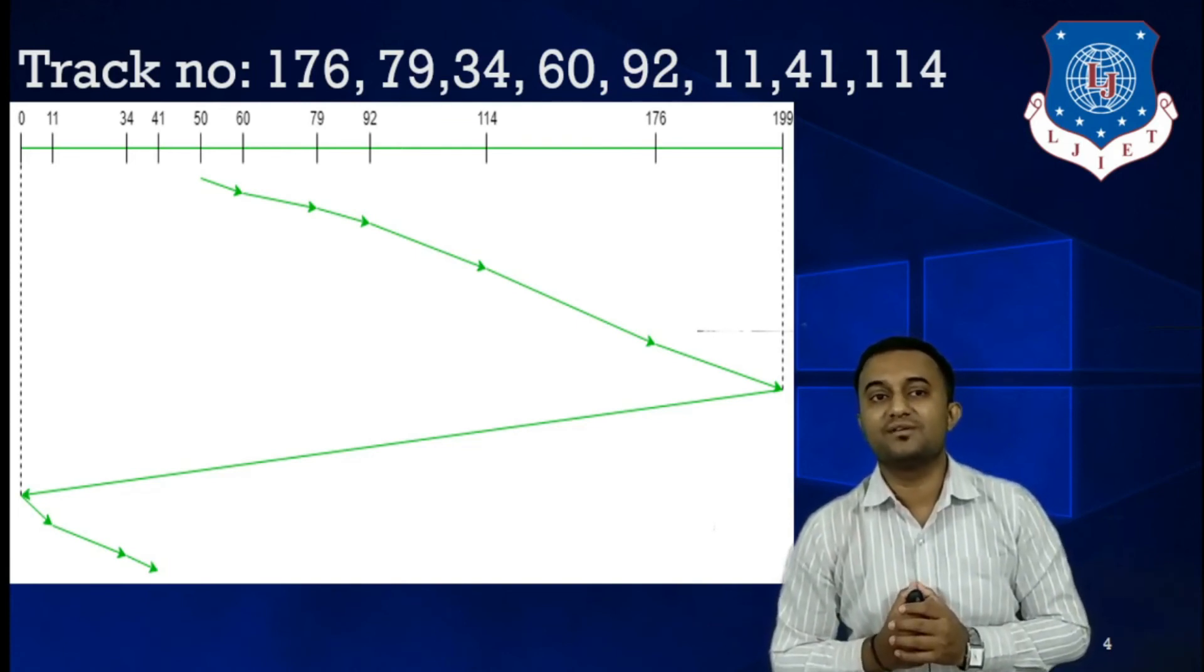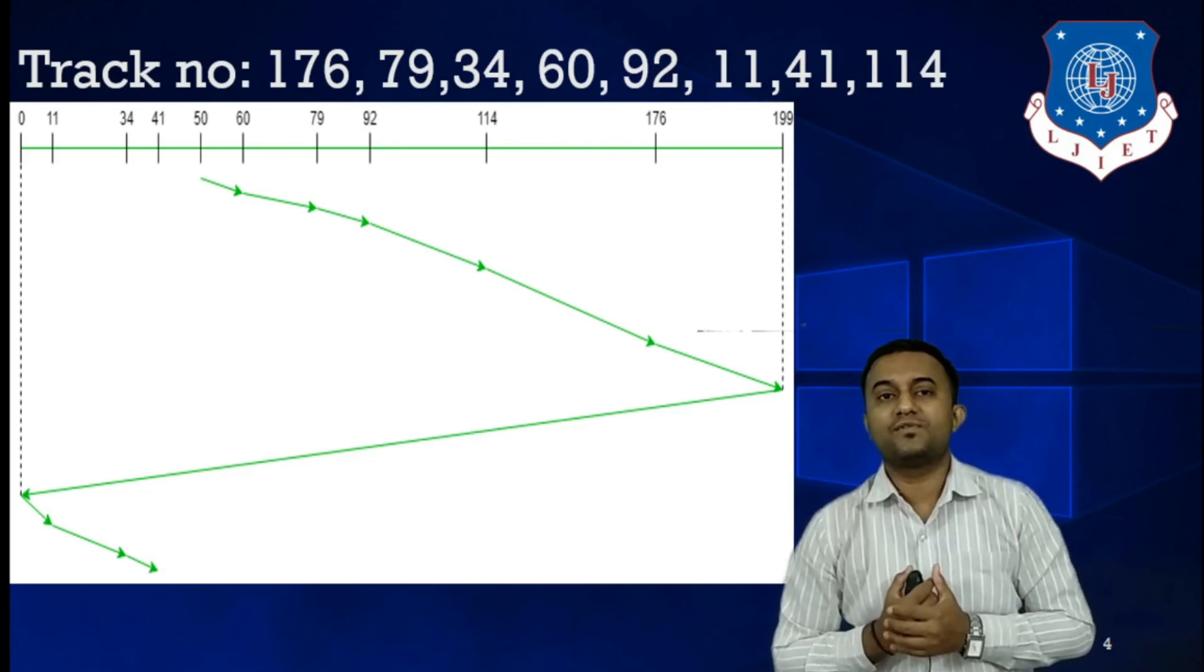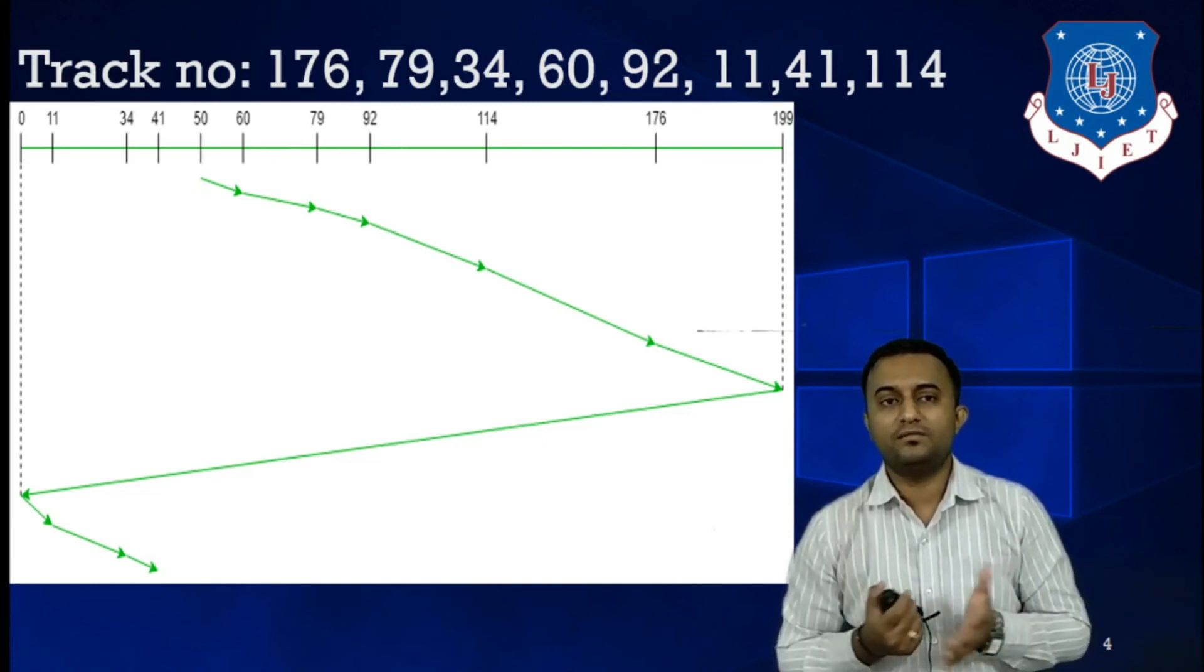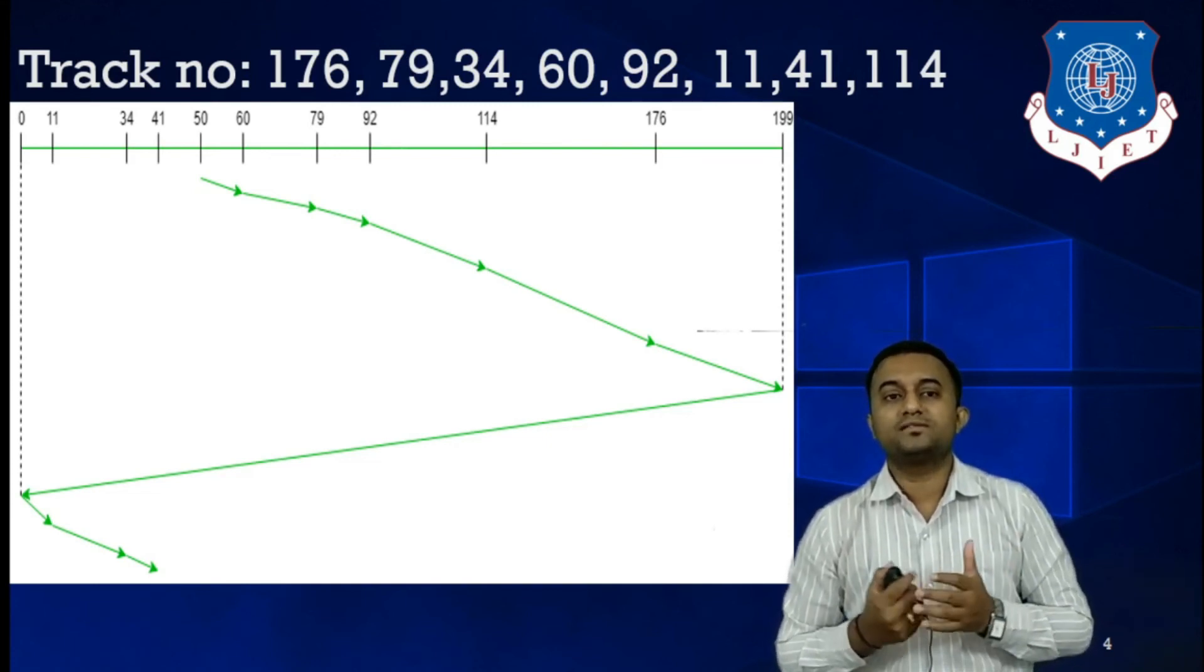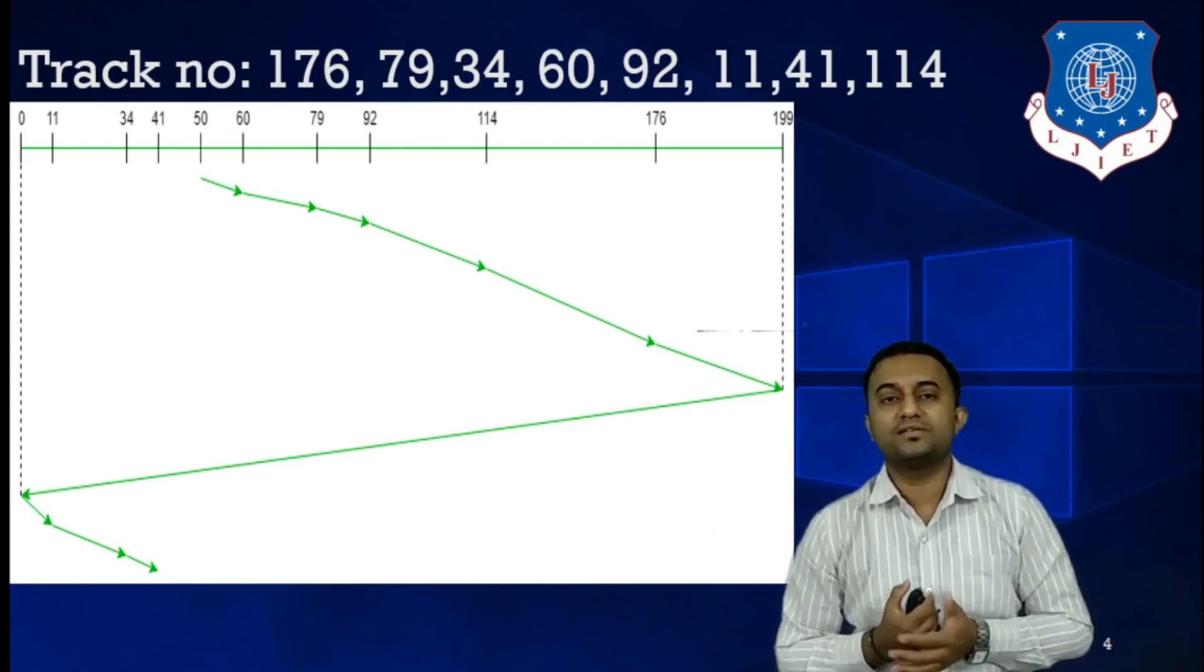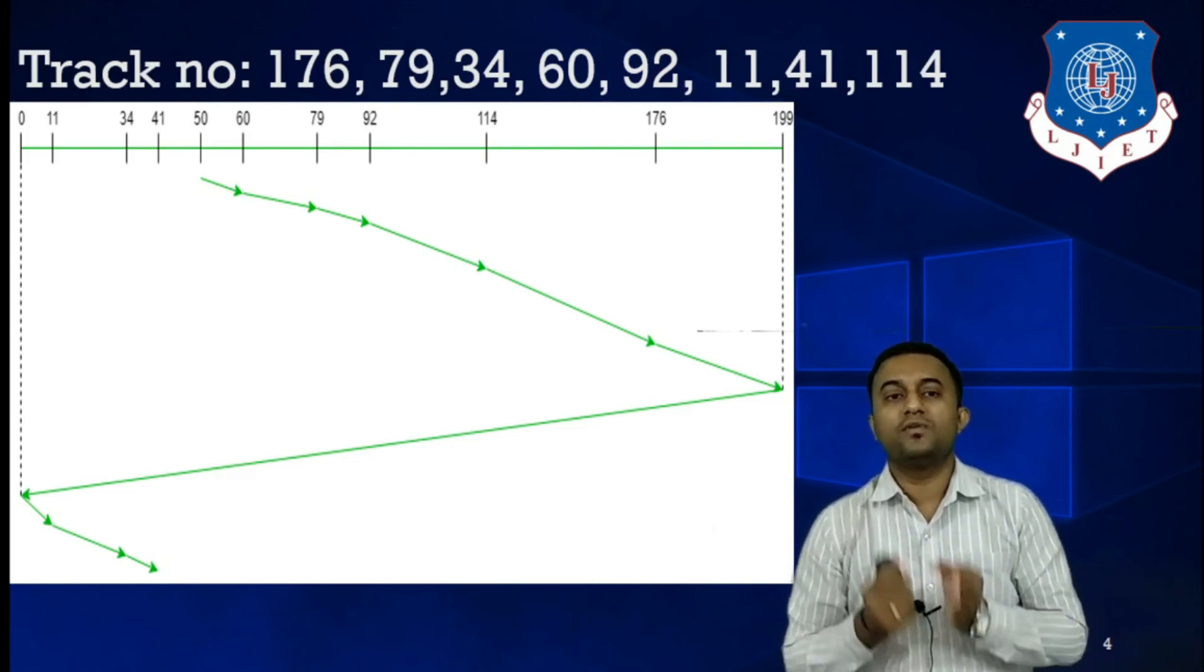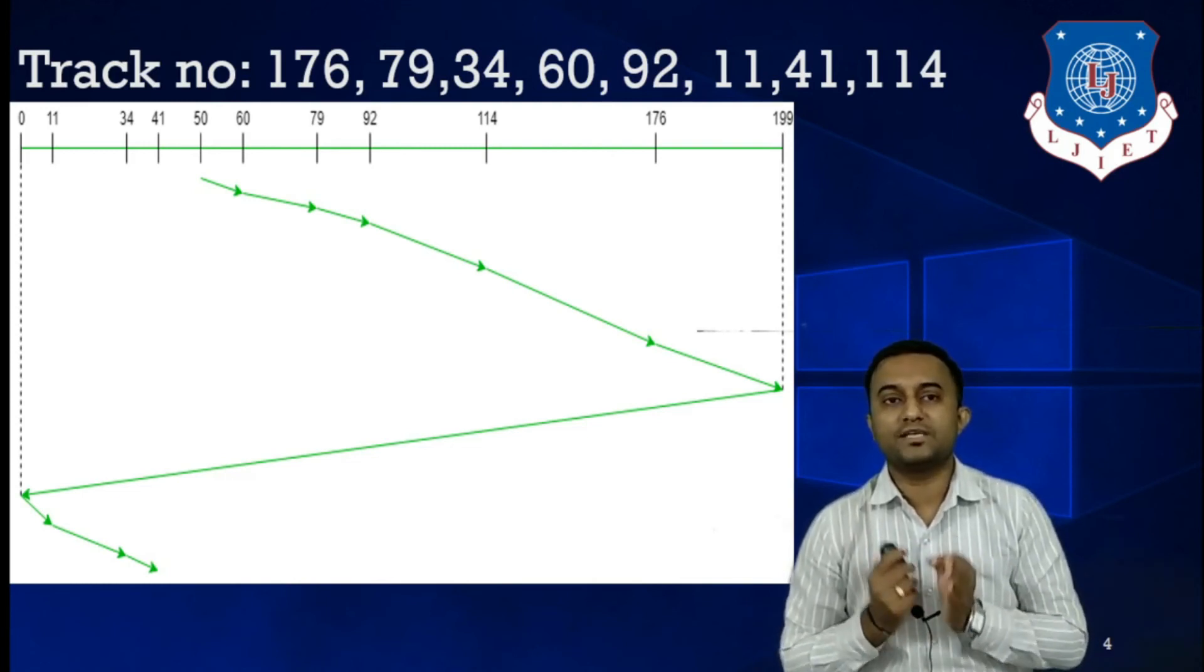In this case, once we started from zero, the next request to be satisfied is 11. Then the second is 34, and the last one is 41. In these last three requests, we will end up our execution. We will not reach to the last track number in this case.